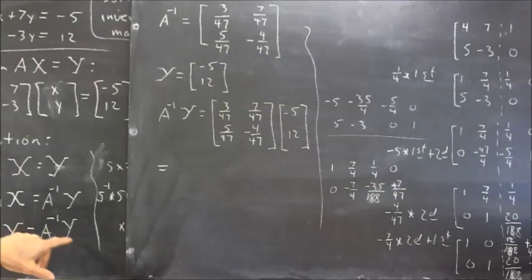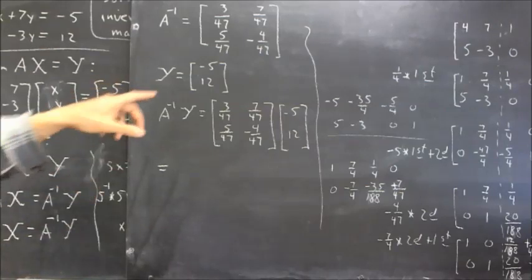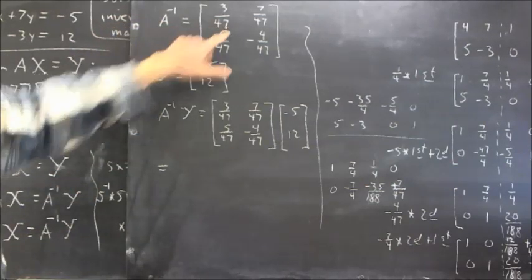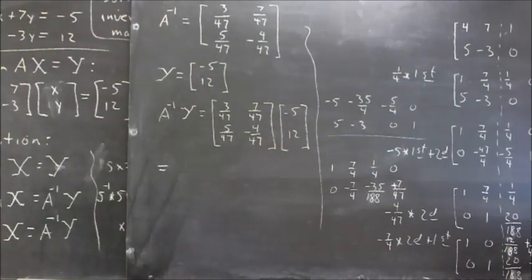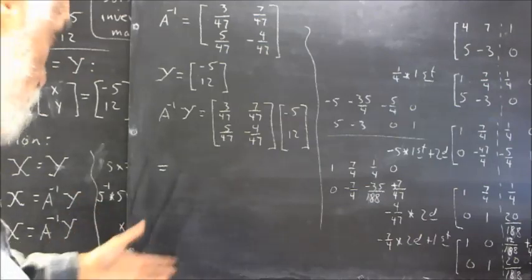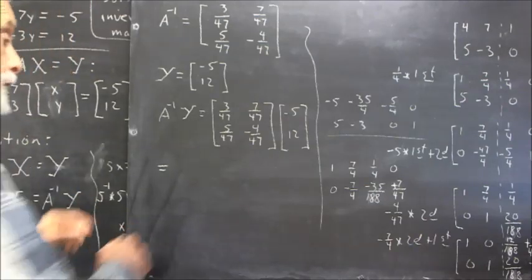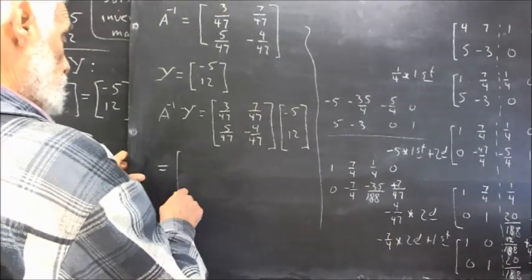So, we write our A inverse vector, we have our y vector, and we're going to multiply the A inverse vector by the y vector. And you should do this. Pause, do this, see if you come up with the same thing I do. I'm going to go ahead now.